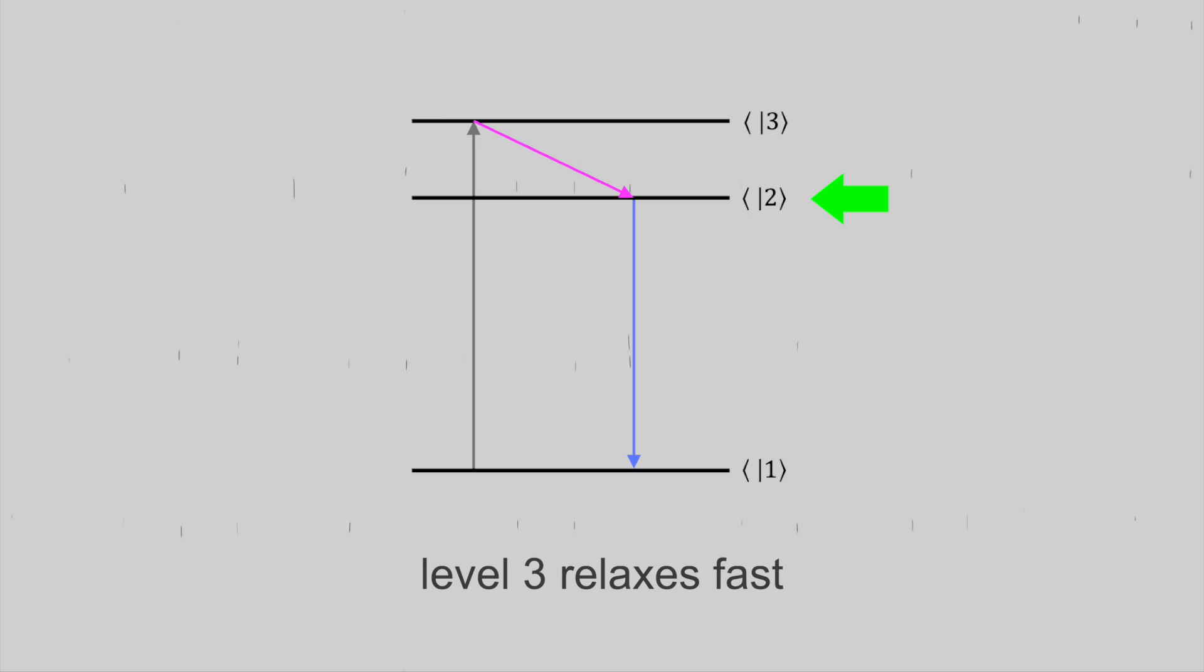And this relaxation usually happens without radiation, but from things like shocks at the glass or phonons or something. So state two is more stable and lives for a much longer time. This now allows for a laser transition from state number two to state number one.